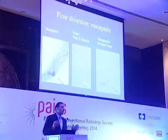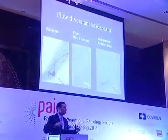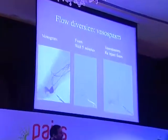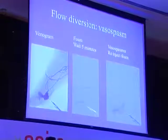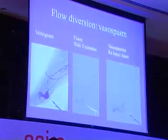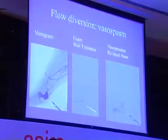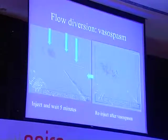To keep the injected drug within the malformation and prevent it from escaping, flow diversion techniques can be used. One technique is creating vasospasm: perform your venogram, inject foam, wait a few minutes, then re-inject. Instead of filling all outflow veins, most are in vasospasm and you fill more of the lesion. In the neck, inject, wait five minutes, and the lesion fills up more completely.